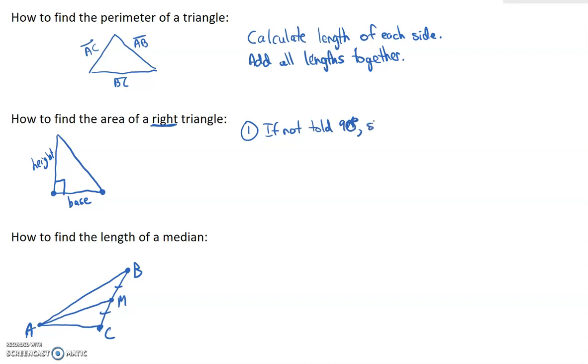And what we would do to do that is we'd find the slope of the base, we'd find the slope of the height, and we know that slope is equal to (y2 - y1) over (x2 - x1). And what we would do is we compare those. They better be the negative reciprocals of one another. And we went over what the negative reciprocals were earlier in this lesson.